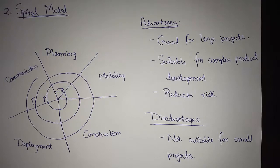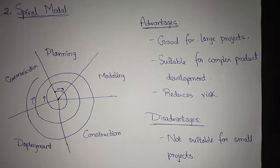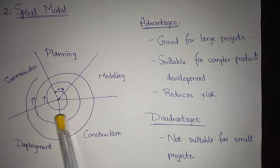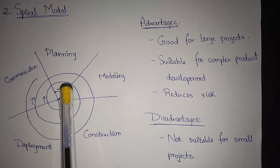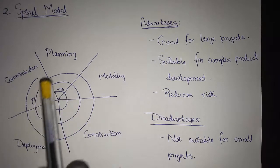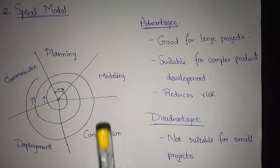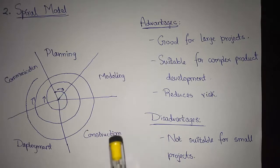Here, software is developed in a series of evolutionary releases. In early iterations, we are releasing either a paper model or a prototype model, then we develop the complete versions of the software. Beginning at the center, we move in a clockwise direction. At each revolution, we consider the risk. The main focus of the spiral model is to identify the risk at each revolution, along with identifying the work products and conditions at each revolution. These are called anchor milestones.